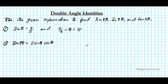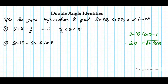By using a version of the Pythagorean identity, cosine θ equals plus or minus the square root of 1 minus sine² θ. This comes from sine² θ + cos² θ = 1. If we solve this for cosine θ, this is the identity we get and it helps us solve for cosine given sine.